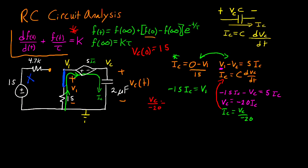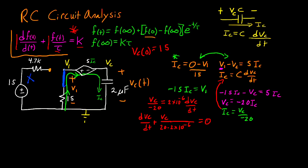Substituting ic equals vc divided by negative 20 into the capacitor equation gives vc divided by negative 20 equals 2 times 10 to the negative 6 times dvc/dt. Rearranging to standard form: dvc/dt plus vc divided by (20 times 2 times 10 to the negative 6) equals 0. From this, tau is 20 times 2 times 10 to the negative 6, and k equals 0.